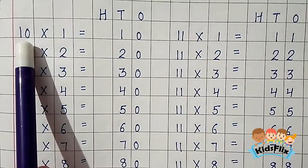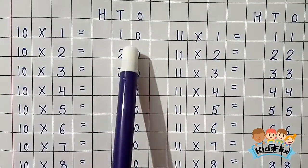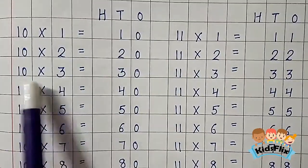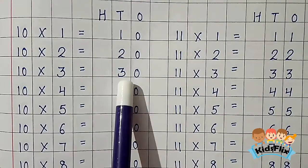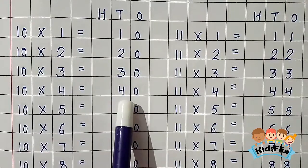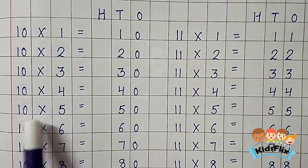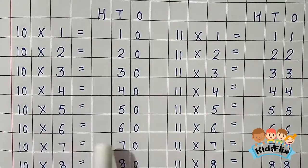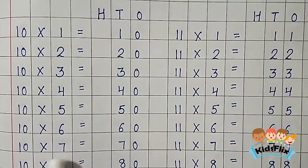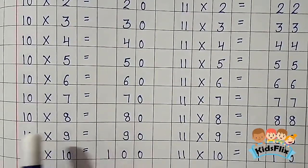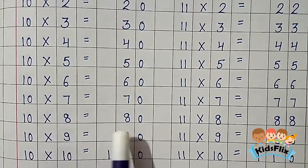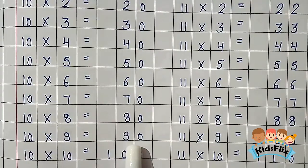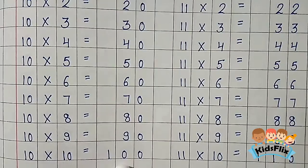Now the table of 10. 10 1s are 10. 10 2s are 20. 10 3s are 30. 10 4s are 40. 10 5s are 50. 10 6s are 60. 10 7s are 70. 10 8s are 80. 10 9s are 90. 10 10s are 100.